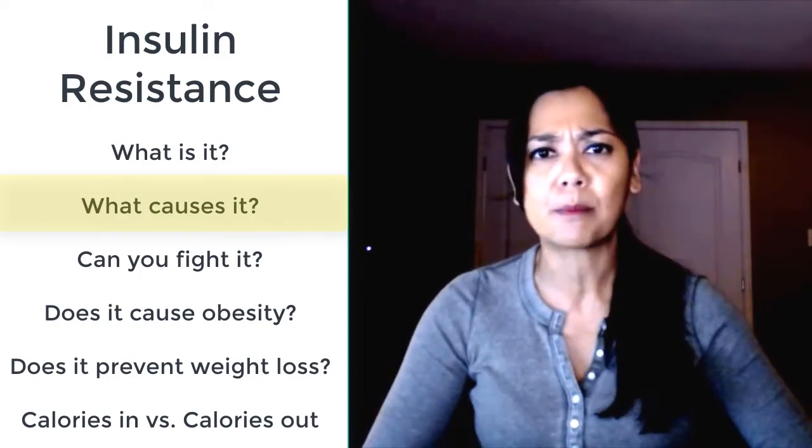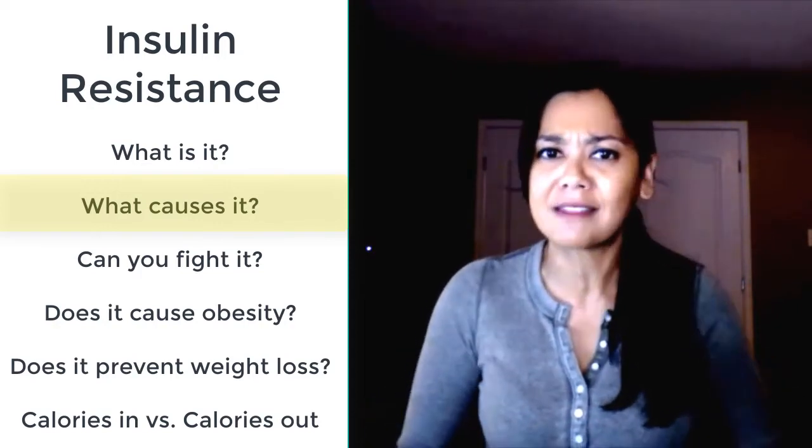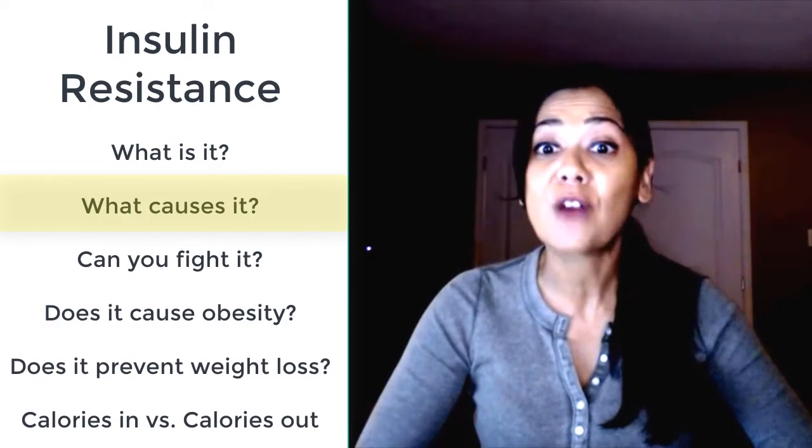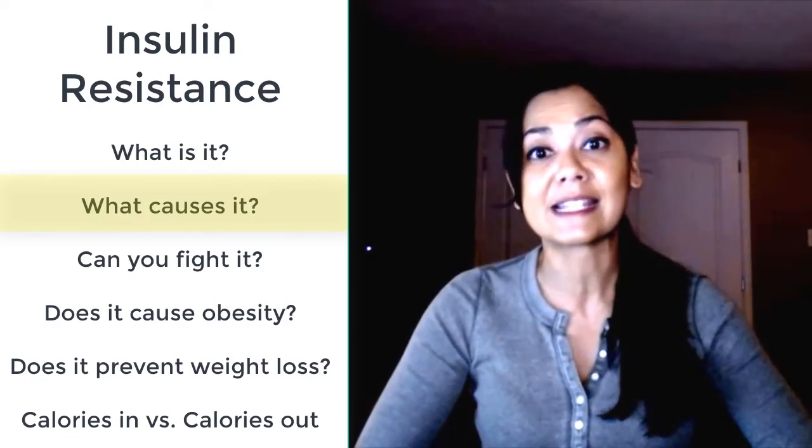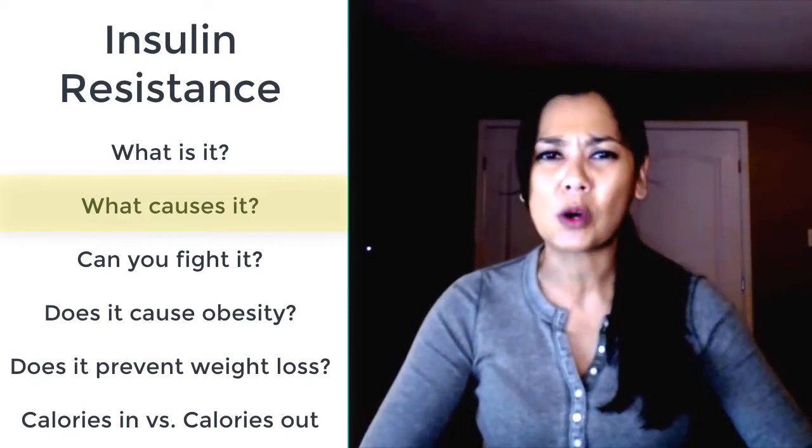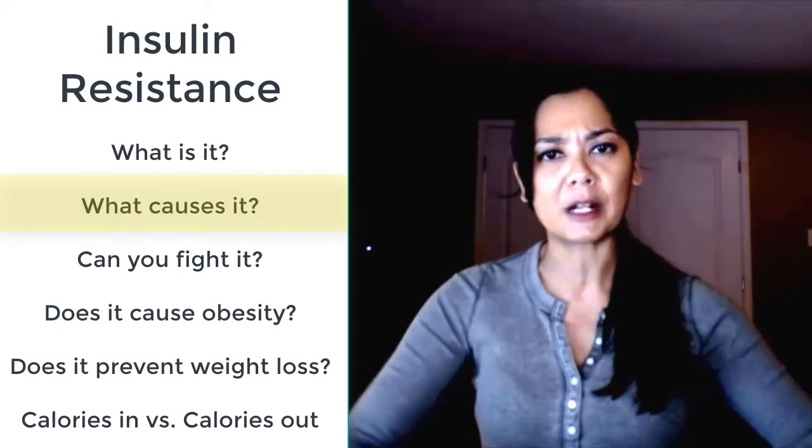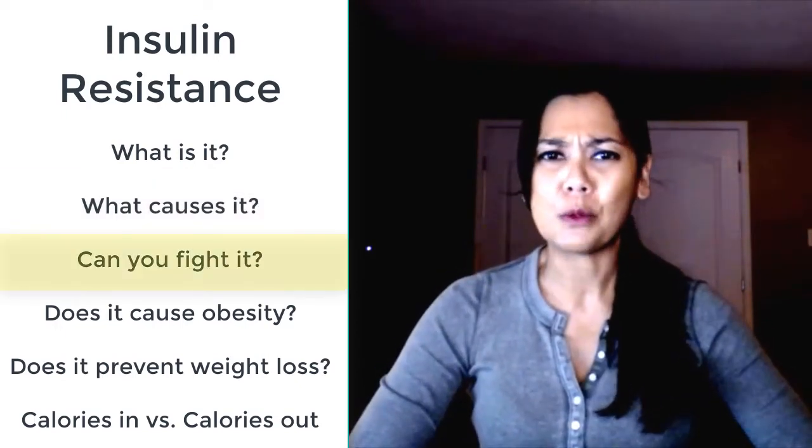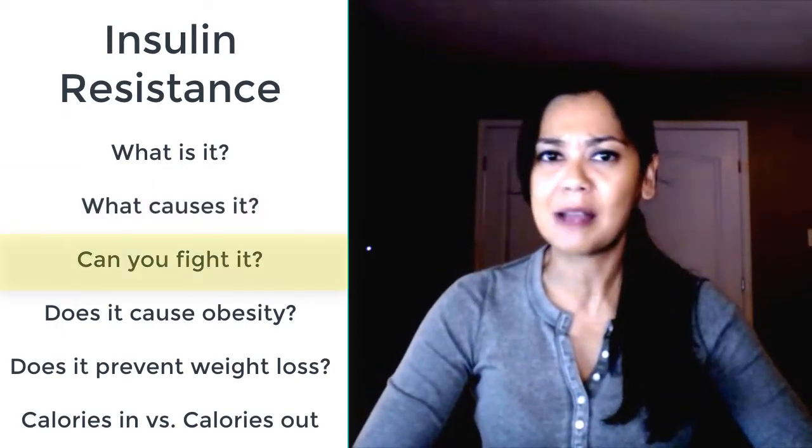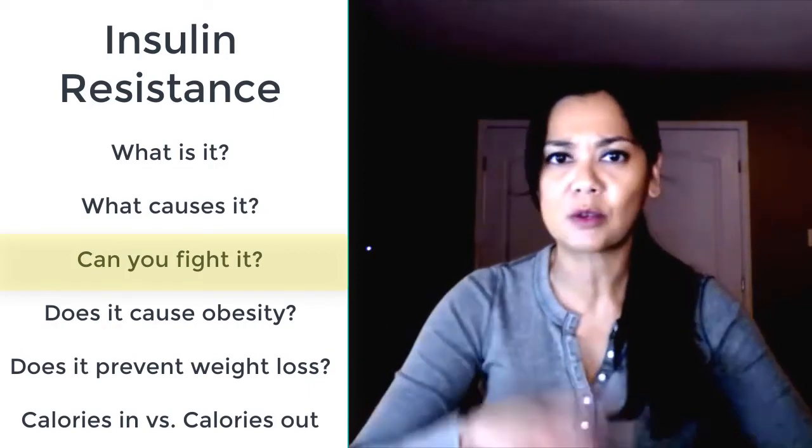Think of a pear-shaped body where most of the weight is in the butt and the thighs. Those people have far less risk of developing insulin resistance than someone that is more apple-shaped with all their weight around the middle.